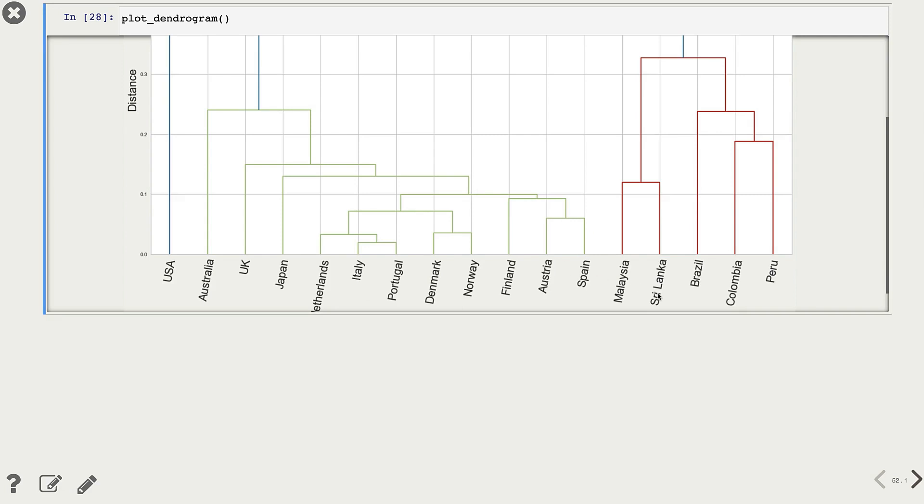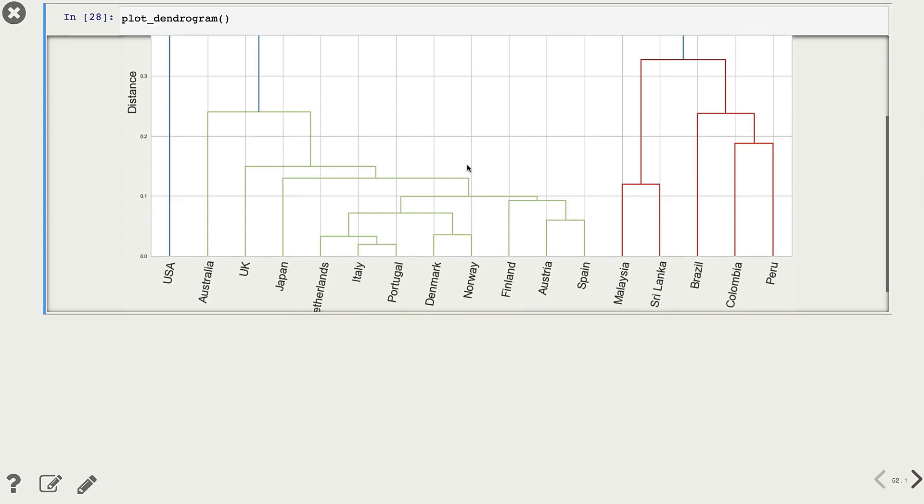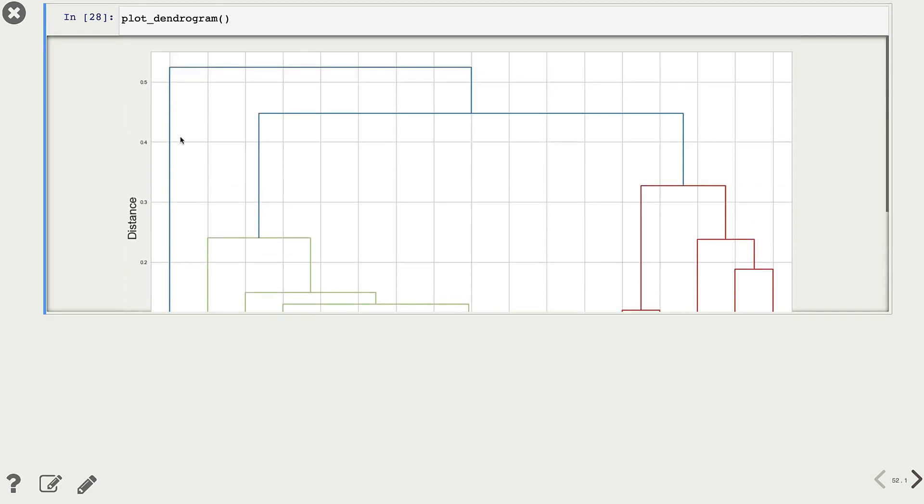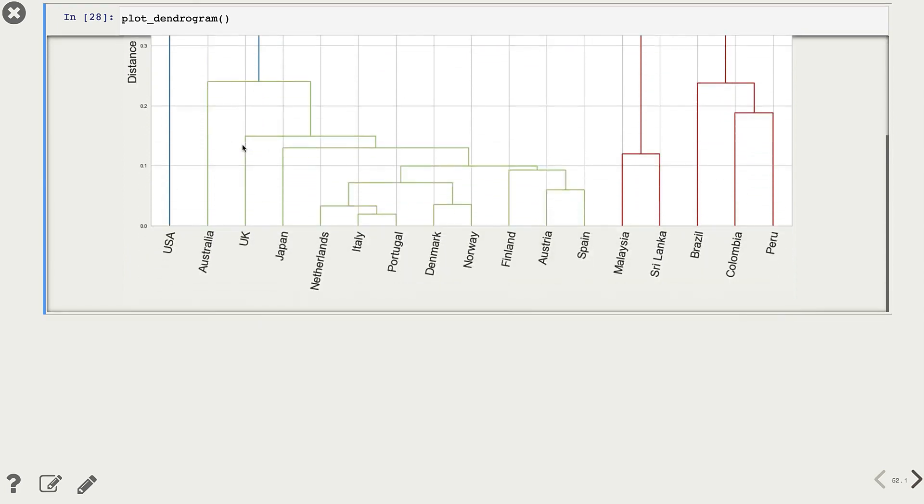And then Malaysia and Sri Lanka, they are kind of close together. And US is kind of on its own. So if we decide to cut this tree at, say, 0.5, then we will get two clusters, US versus all other countries.